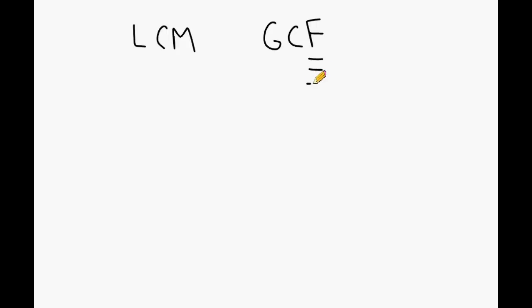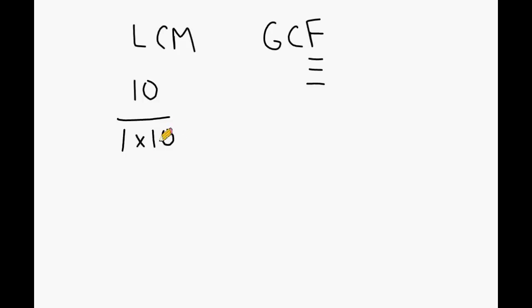A factor is simply a number that can equally fit inside another number. For example, if we look at the number 10, we know that we can produce 10 by multiplying 1 and 10, and also by multiplying 2 and 5. All of these individual numbers are factors of 10 because they can be equally divided into 10. So a factor is something that goes inside another number.